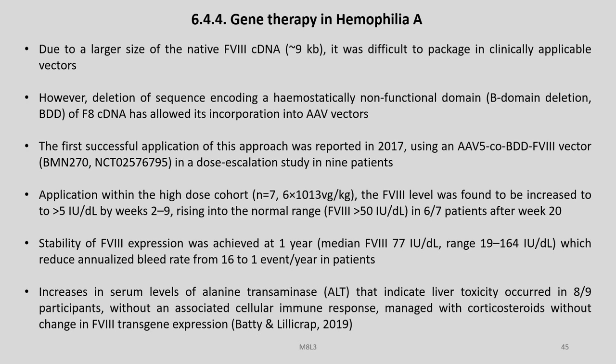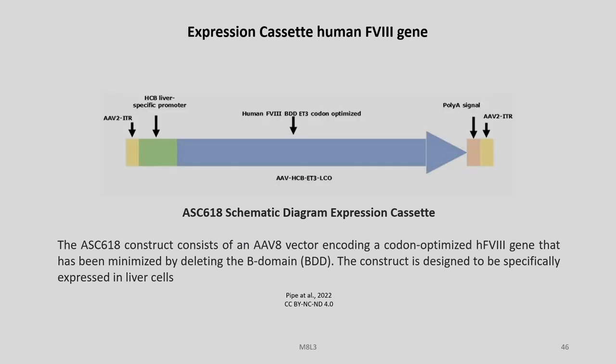Stability of factor 8 expression was achieved at 1 year, which reduced the annualized bleed rate from 16 to 1 event per year in patients — a remarkable achievement. Increases in serum levels of alanine transaminase indicating liver toxicity occurred in 8 out of 9 participants without an associated cellular immune response, managed with corticosteroids without change in factor 8 transgene expression.